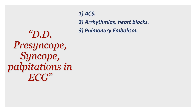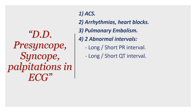The differential diagnosis should include three no-brainers you shouldn't forget: ACS, arrhythmias, and pulmonary embolism. Then you've got two intervals to check — the PR interval and the QT interval — and for both you need to check for short and long. A long PR interval is part of a trifascicular block, a short PR interval is part of pre-excitation syndrome, and both long and short QT intervals are associated with polymorphic VT.